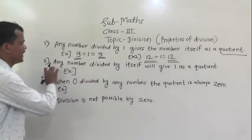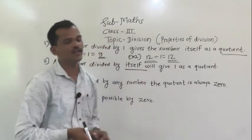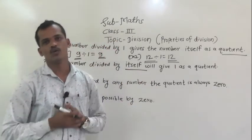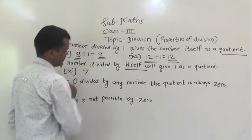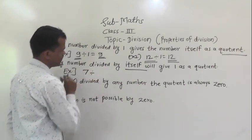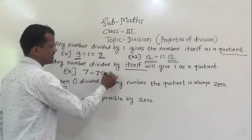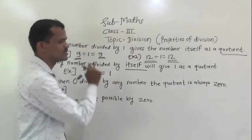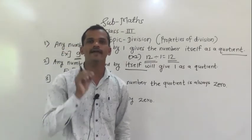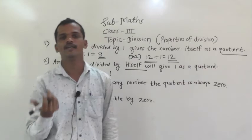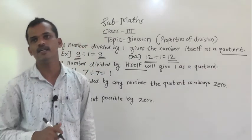Next property: any number divided by itself will give 1 as a quotient. Take any number — I am taking here 7 divided by 7. Here 1 comes as the quotient. This property states that any number divided by that same number gives 1 as the quotient.